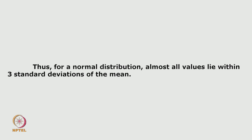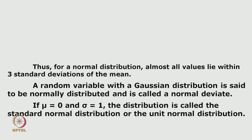For a normal distribution, almost all values lie within three standard deviations of the mean. A random variable with a Gaussian distribution is said to be normally distributed and is called a normal deviate. When the mean equals 0 and the standard deviation equals 1, the distribution is called the standard normal distribution or unit normal distribution — a Gaussian function with σ = 1.